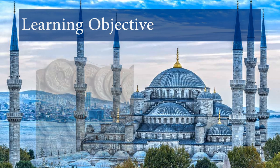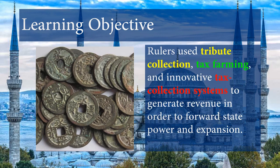Next learning objective: rulers used tribute collection, tax farming, and innovative tax collection systems to generate revenue in order to forward state power and expansion. Basically, how did the government get money? They collected tribute — not just money, but also goods. Tax farming is where you give a percentage of the crops you grow as payment of tax, as well as straight-up tax collection systems.